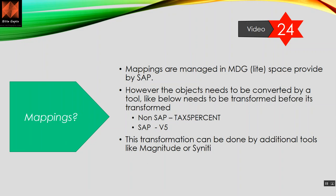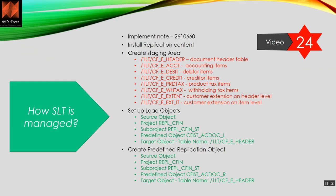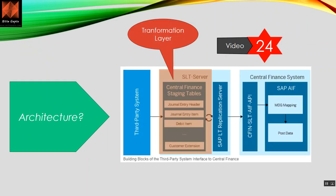SAP partner tools like Magnitude or others can assist with this transformation. To summarize the broad architecture: you extract data from the third-party system, transform values that don't match SAP formats, load the data into SLT staging tables, and from there it flows into Central Finance.